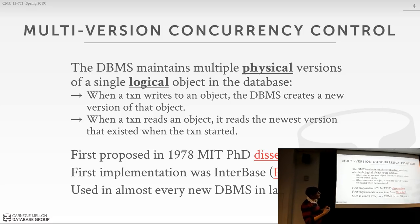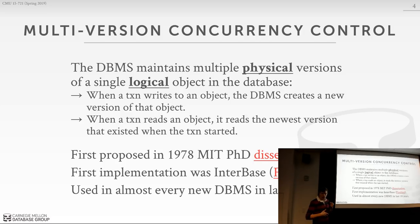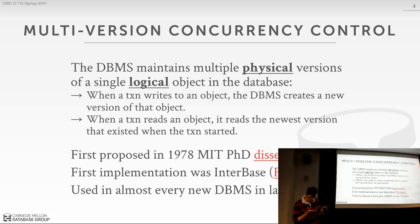Now that we have multiple physical versions for a single logical object, when you do a query and say 'read that object,' the database system has to figure out what's the correct version to see. This is what we'll be focusing on today and next class — how it figures out, for what timestamp should something be viewable to you, and where to go find the version you want.